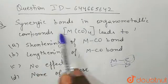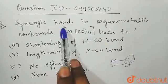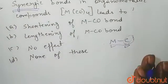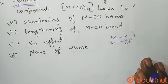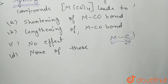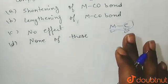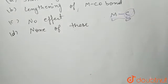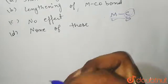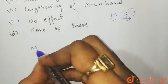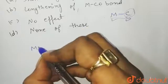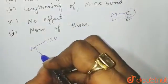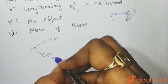In these organometallic compounds, synergic bonding occurs. What does synergic bonding mean? In M(CO)₄, if you see the structure, CO is nothing but C triple bond O.